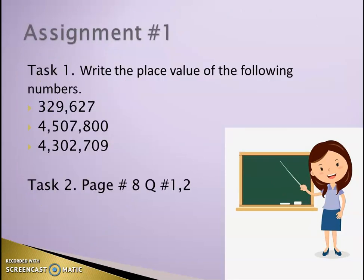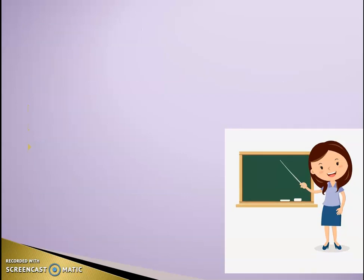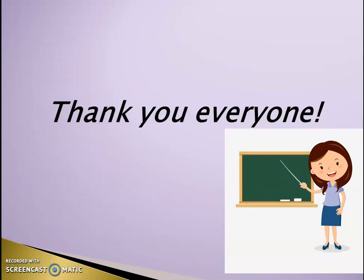This is your assignment. For task one, you have to write the place value of the following numbers: 329,627; 4,507,800; and 4,302,709. For task two, look at the book page 8, questions 1 and 2. Thank you everyone.